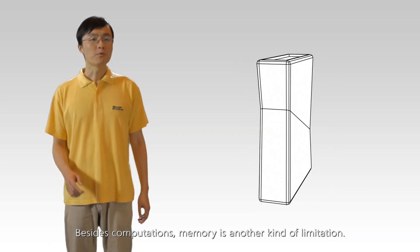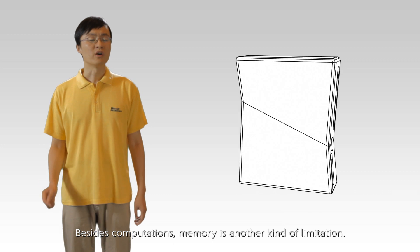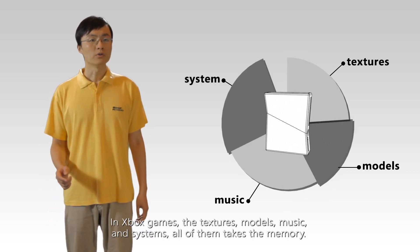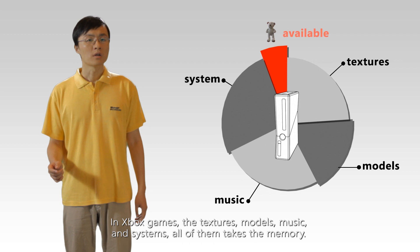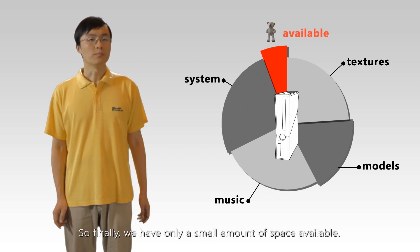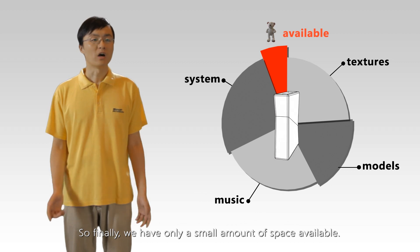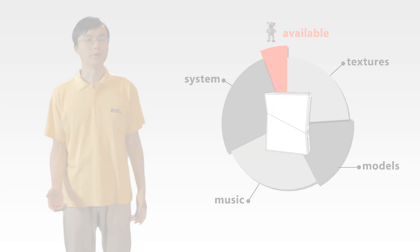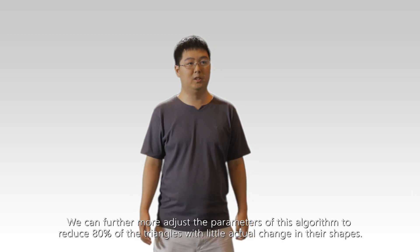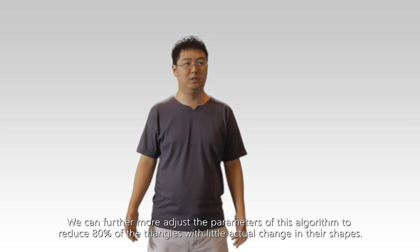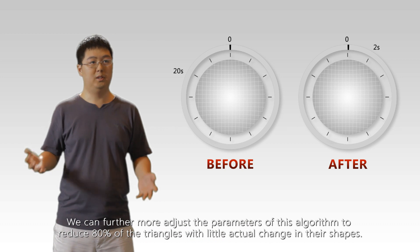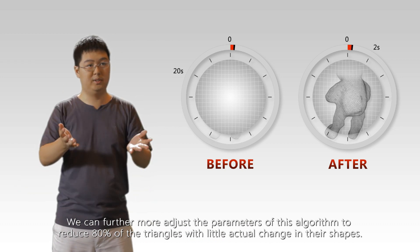Besides the computation, memory is another kind of limitation. In Xbox games, the textures, models, music, and the system all take memory, so finally we only have a small amount of space available. We can furthermore adjust the parameters of this algorithm to reduce 80% of the triangles with little actual change in their shapes.